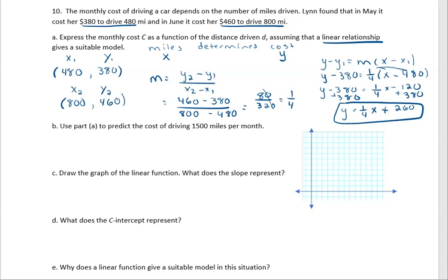Now it's telling us to use part A to predict the cost of driving 1500 miles. Well, if we're predicting the cost, cost was Y, so that means we want Y equals. And if we're looking at the miles being X, that means X is going to be 1500. So we have one fourth times 1500 plus 260. So that looks like we're going to get $635. So our estimate for the cost based on the model we created is $635.